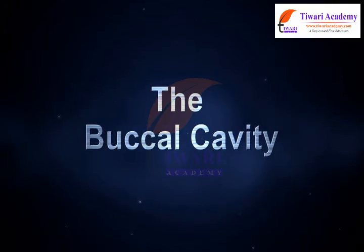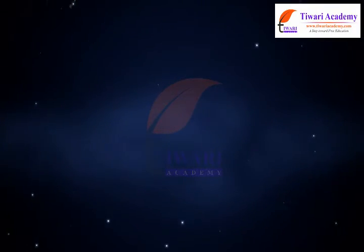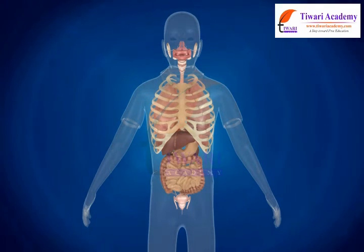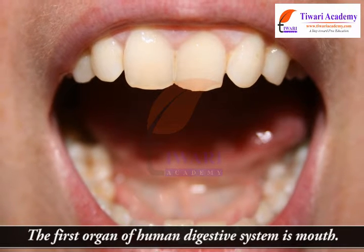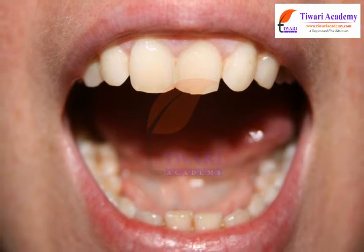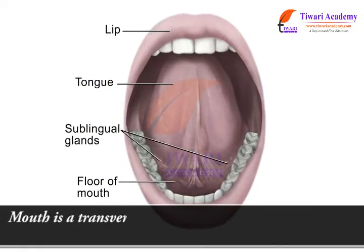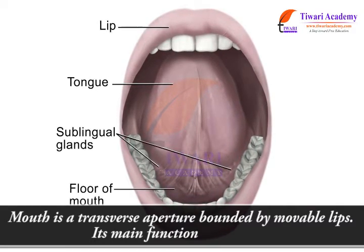In human beings, nutrition takes place through the human digestive system. The first organ of the human digestive system is the mouth. The mouth is a transverse aperture bounded by movable lips, and its main function is ingestion.